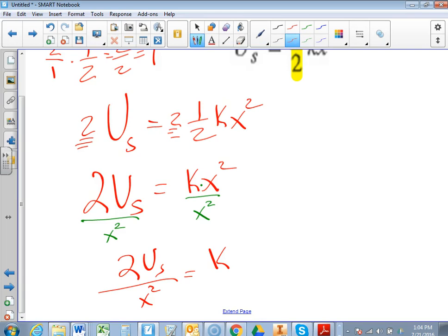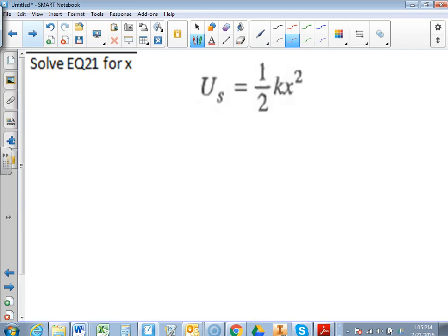So in the next problem, we're going to look at how to, it's going to be basically the exact same way, except we've got one last step to get rid of the square. So in this problem, we'll start it off the same way. We're going to multiply both sides by 2. So that'll leave us with 2u sub s equals kx squared.